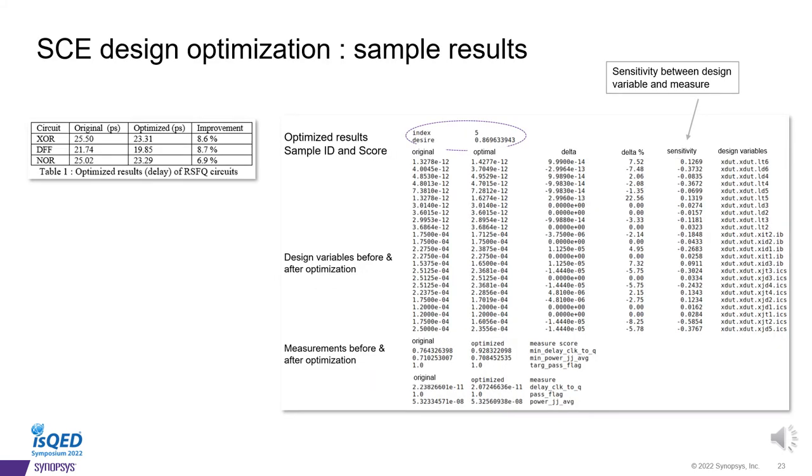For this slide, we have an example report coming from HSPICE AVA. This report indicates the design's original value as well as the design's optimized value. It expresses the delta value as well as the sensitivity of each and every single design variable. It also reports the measurement results, what we originally had to what we now have after it's been optimized. In this case, we're optimizing both delay and power. Over here on the left, we're showing the results of three basic library cells which we investigated, the XOR gate, the D flip-flop, and the NOR gate. As we can see, in each case, we were able to improve the performance, you know, somewhere between 7% to 9%.